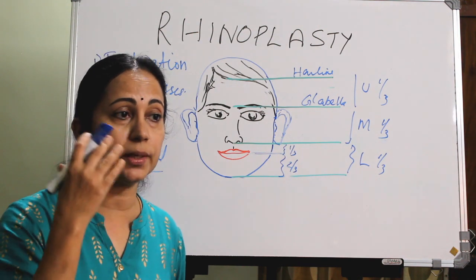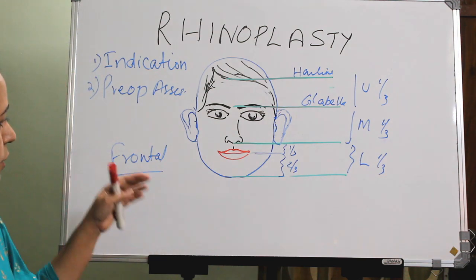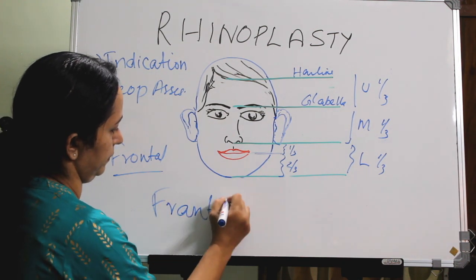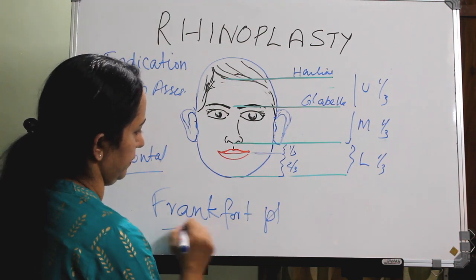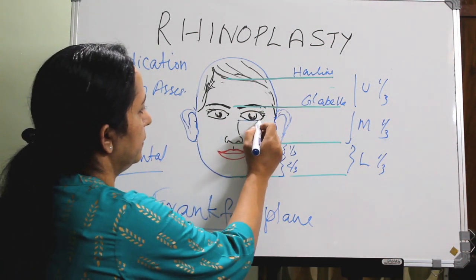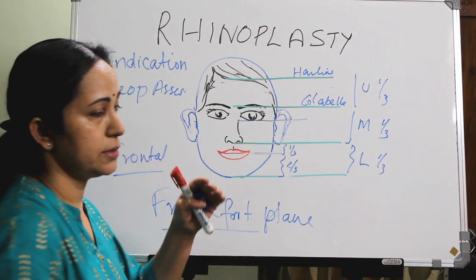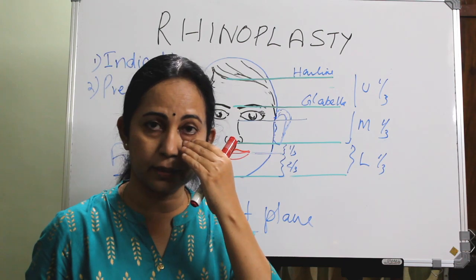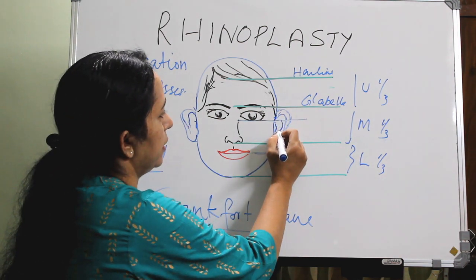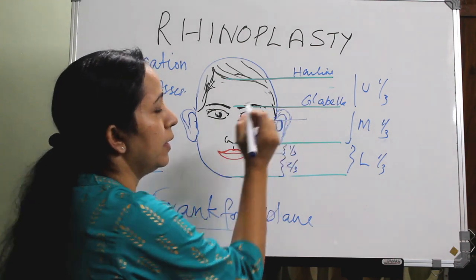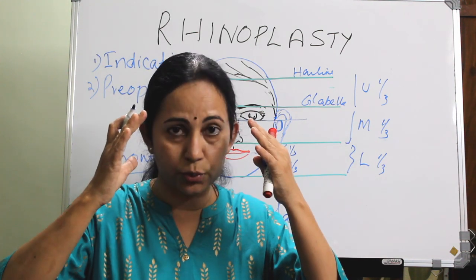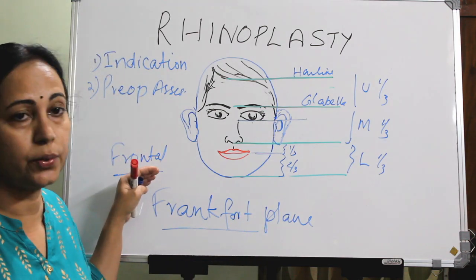You have to take several facial photographs before planning rhinoplasty. The frontal view should be taken in the Frankfurt plane. The Frankfurt plane is a horizontal line passing through the infraorbital rim and the upper border of the external auditory canal. These should be in the same horizontal plane, and the face should be kept in that orientation when taking the frontal picture.